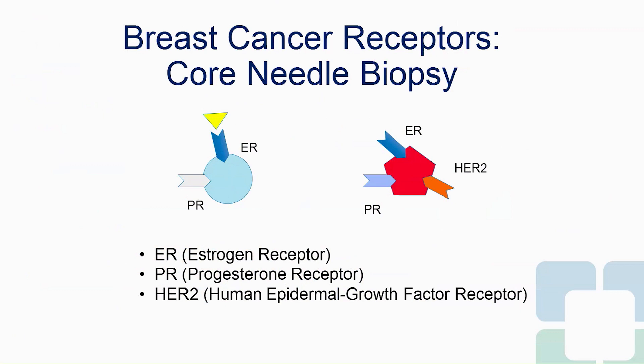HER2 receptors usually aren't found on normal breast cells or cancer cells. So if a cancer cell has that receptor, it has essentially developed a way to grow and divide on its own. A normal breast cell is estrogen receptor positive, progesterone receptor positive, and HER2 negative.